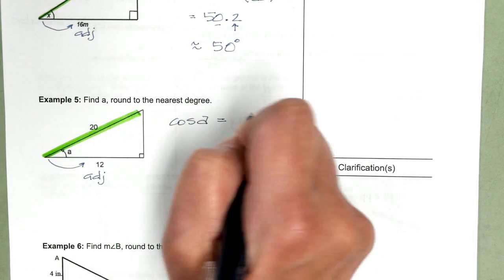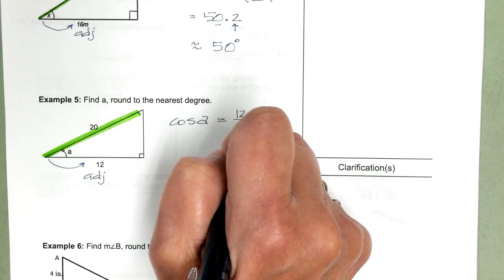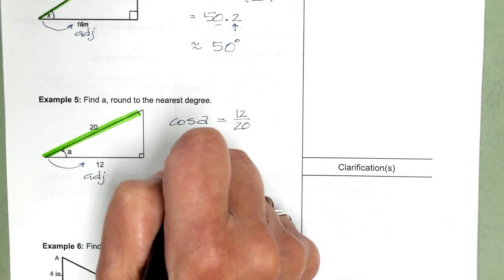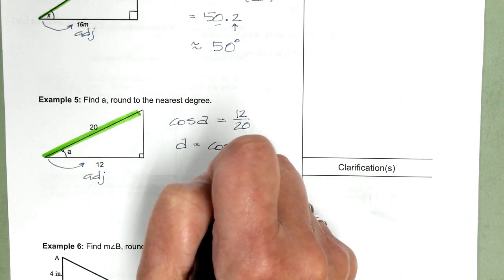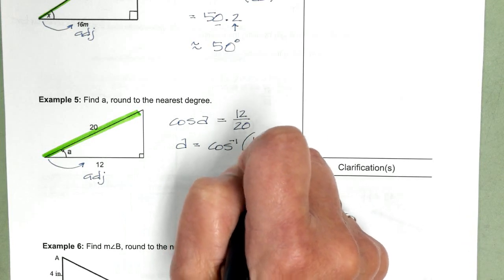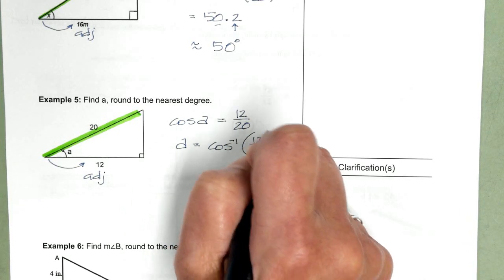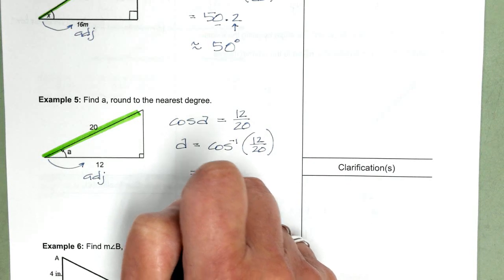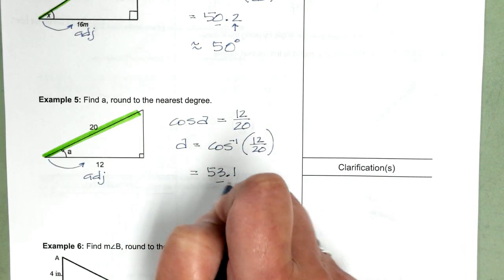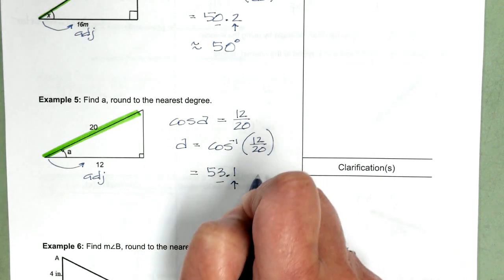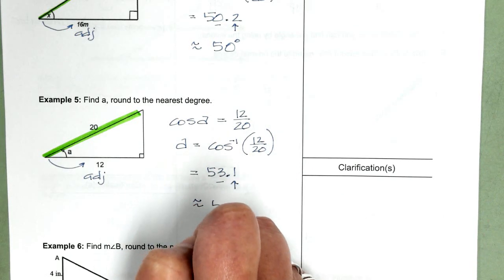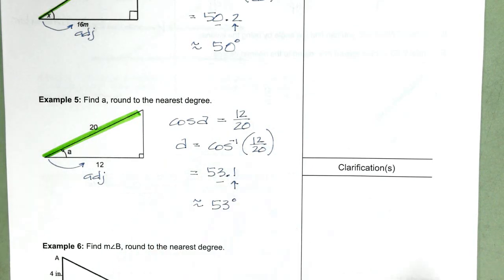Now, cosine A equals 12 divided by 20. Take the inverse cosine of 12 divided by 20, and that gives us 53.1. Rounding to the nearest degree, you get 53 degrees.